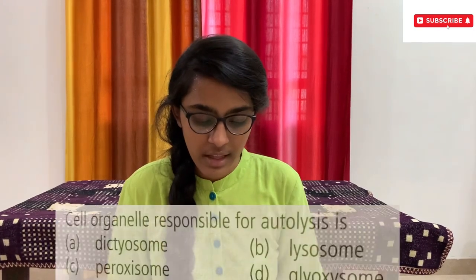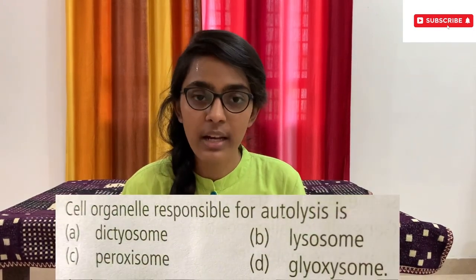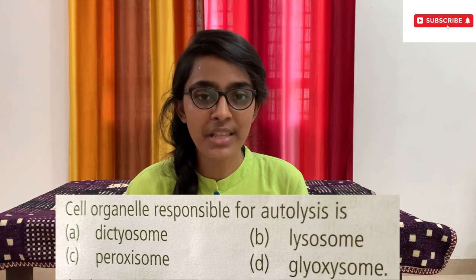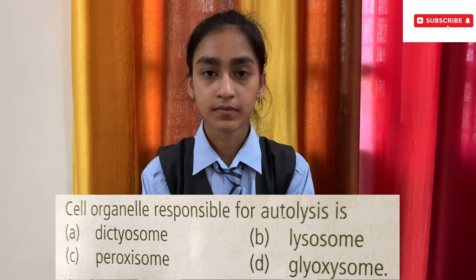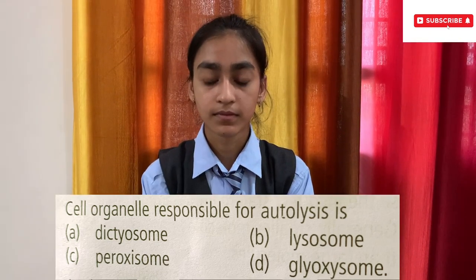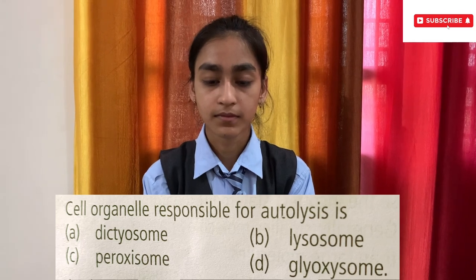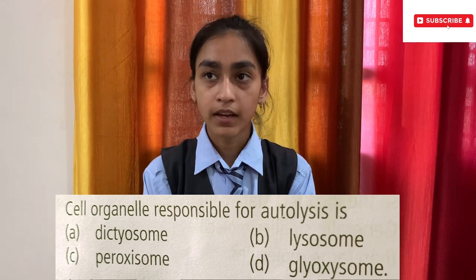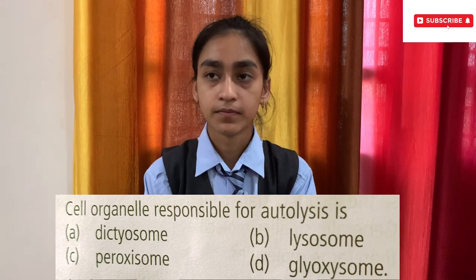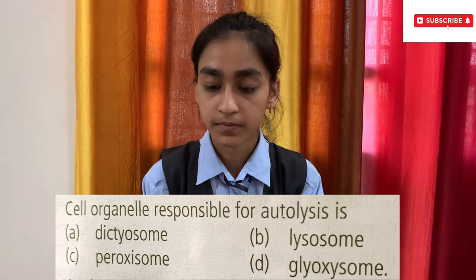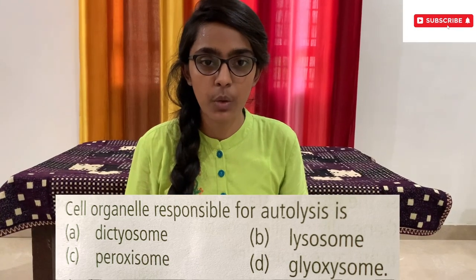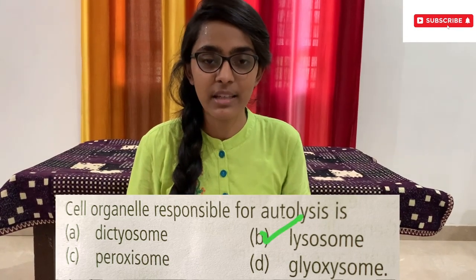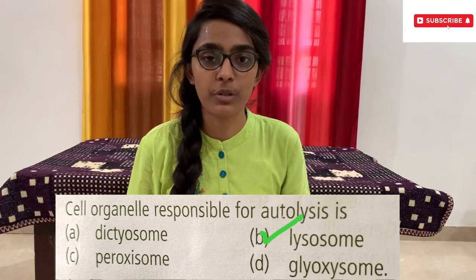The next question goes to Sejal. Cell organelle responsible for autolysis is — options: A) Dictyosome, B) Lysosome, C) Peroxisome, D) Glyoxysome. Option B, Lysosome. Are you sure? Yes ma'am. Option B, Lysosome, is the correct answer. Give her a huge round of applause!